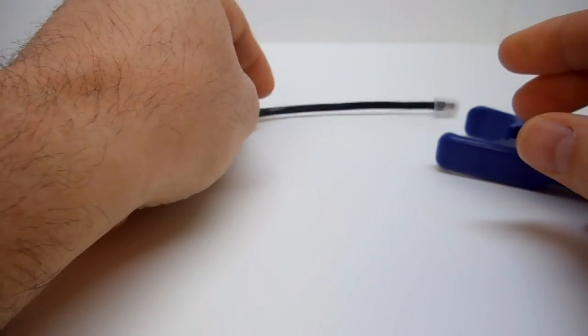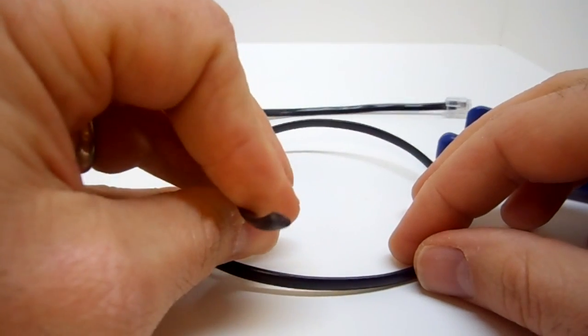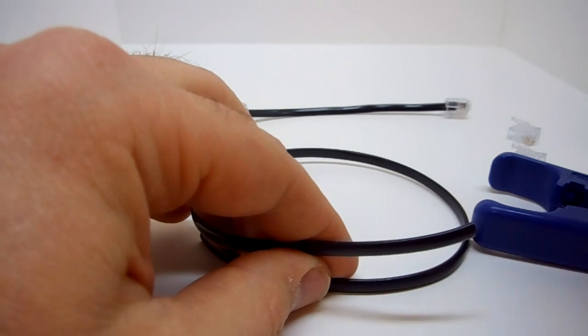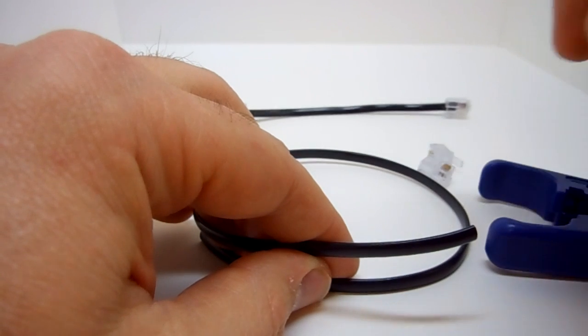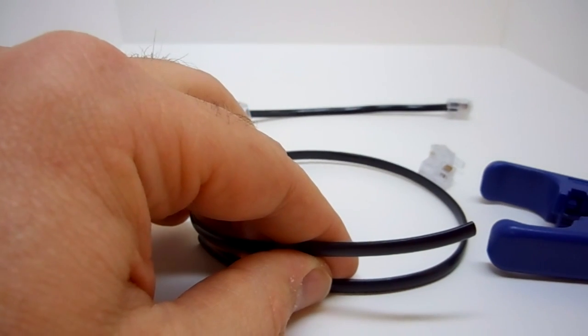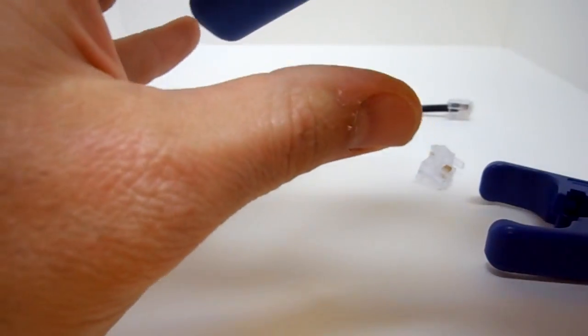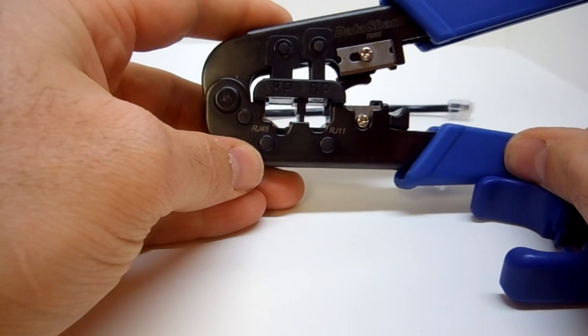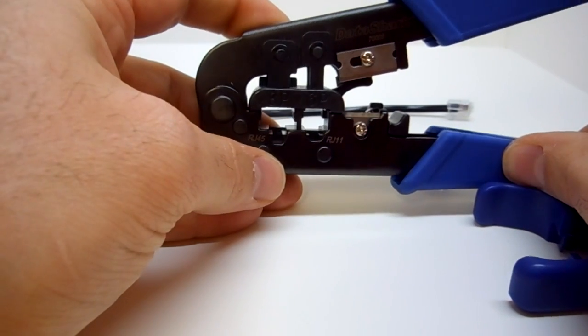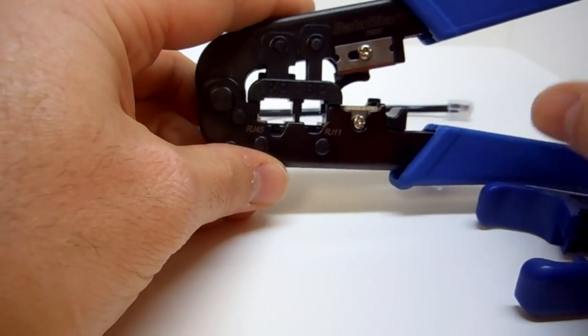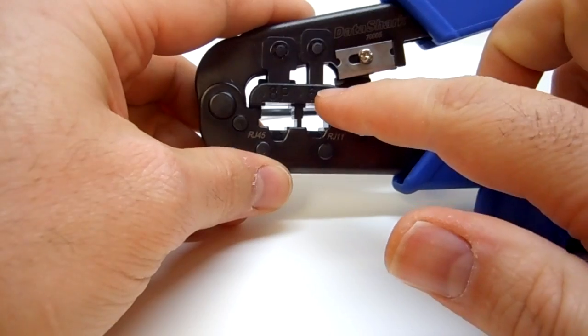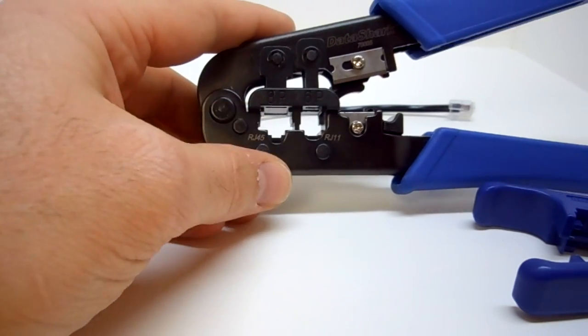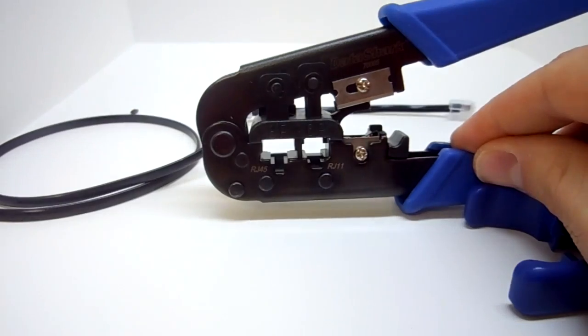Here we have a piece of the flat four conductor cable I spoke of earlier, some connectors that have not been crimped yet, and this crimping tool, which is a standard cat5 crimping tool. If you notice it says RJ11 right here and 6P right here - that means this is the section of the crimper we're going to be using. You can buy these at Micro Center or any computer store that sells ethernet cable.